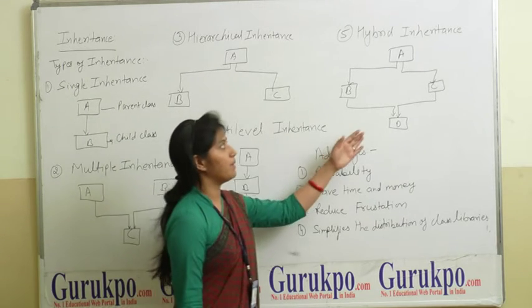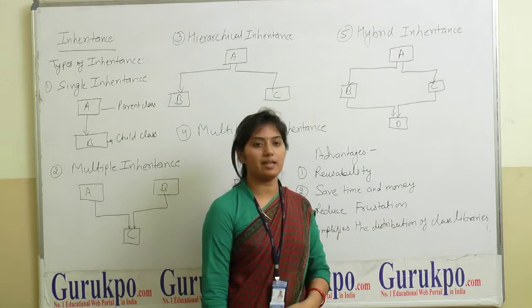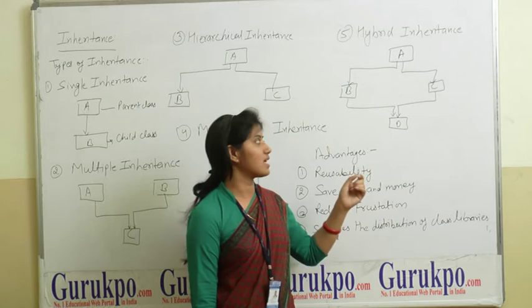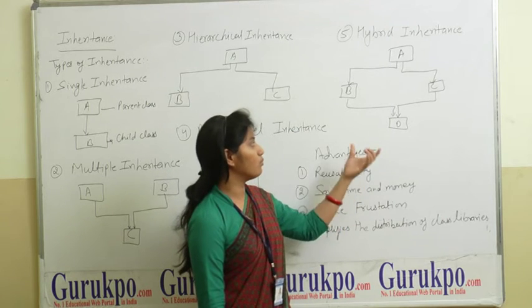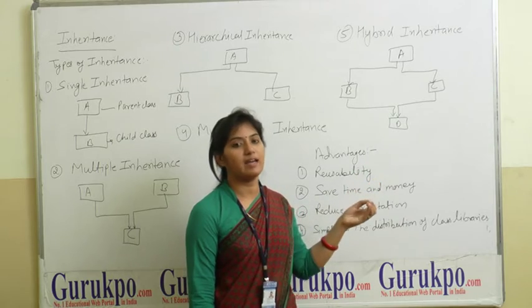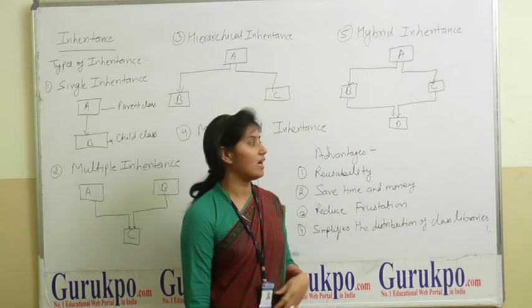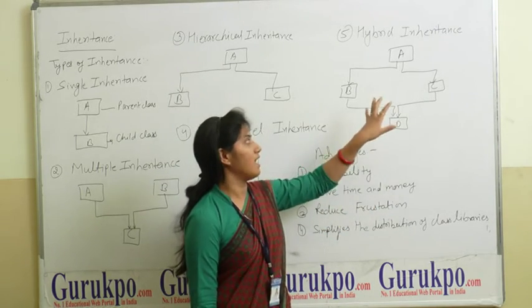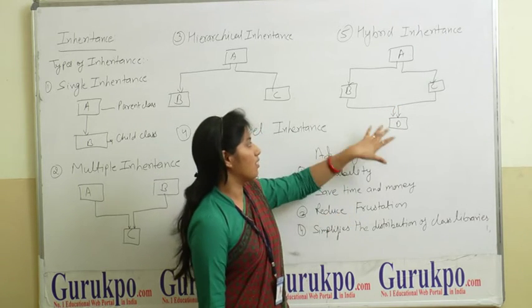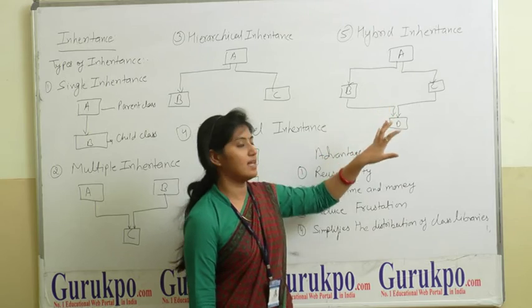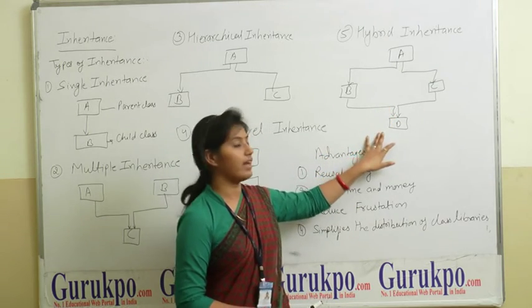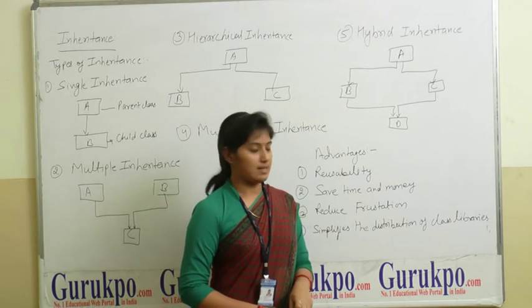The fifth type is hybrid inheritance. In hybrid inheritance, two classes inherit one class's objects and properties. Then by both of those two classes, one class again inherits their properties. That means in class D, A, B, and C — all three are inherited. So for D, A, B, and C are the three parent classes, making D the child class and those three the parent classes.